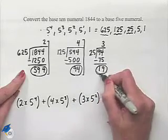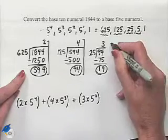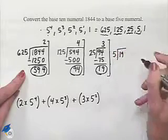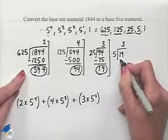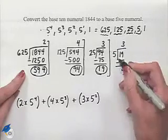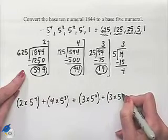And now we go to the 19 and our next power of 5. This is 5 to the 1st. So we're going to have 19 divided by 5. That will divide into it 3 times. 3 times 5 is 15. Subtracting gives us a 4. This tells us that we're going to have 3 times 5 to the 1st power.